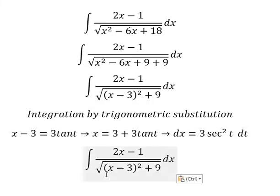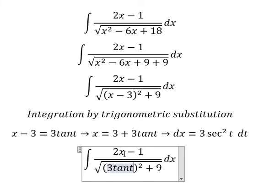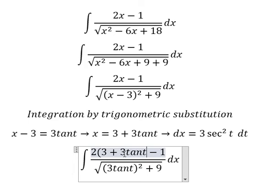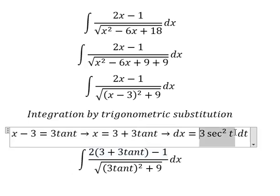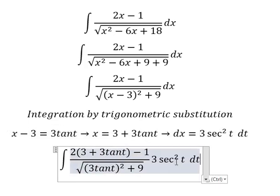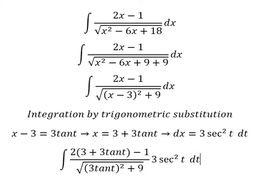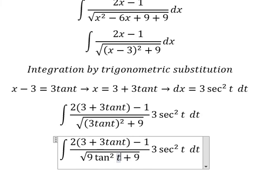So we substitute everything in. s is replaced by 3 plus 3 tan(t), ds is replaced by 3 sec²(t) dt, and (s minus 3)² is replaced by 9 tan²(t).